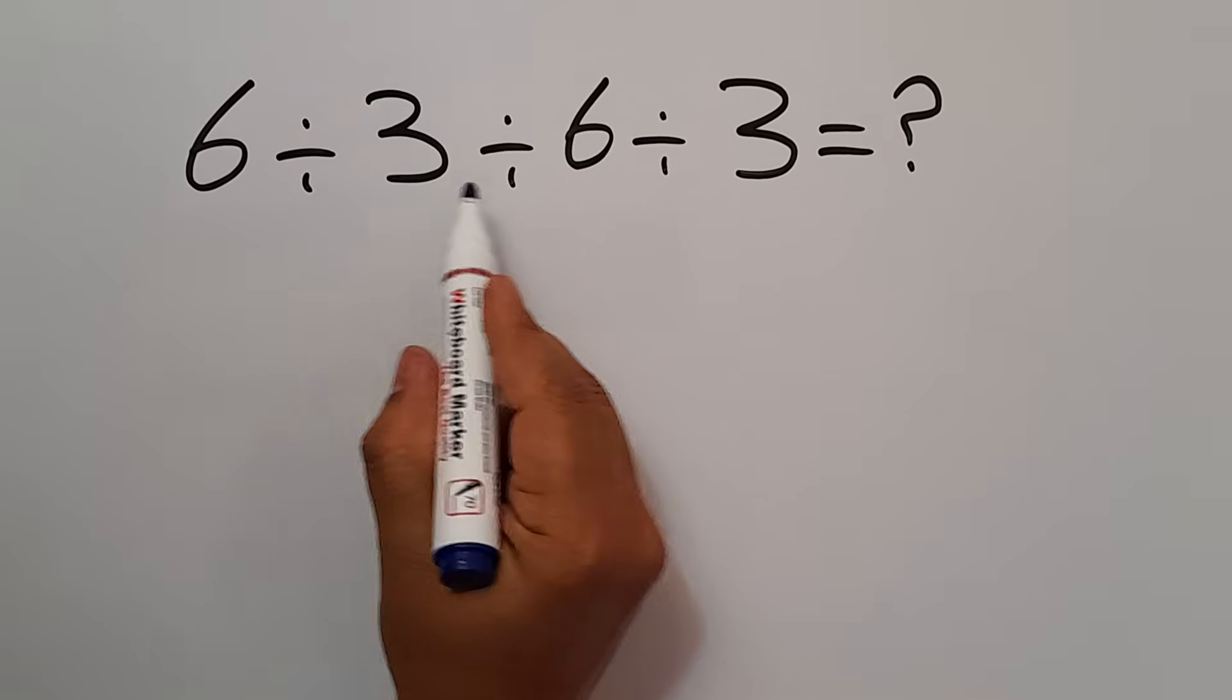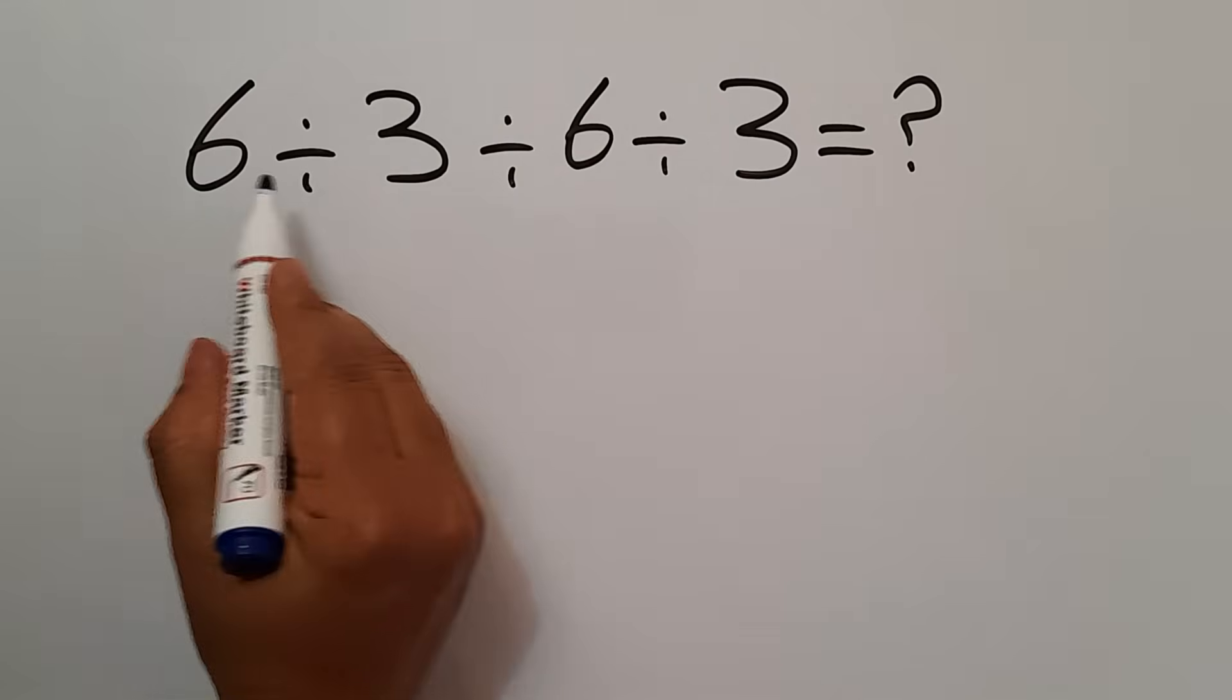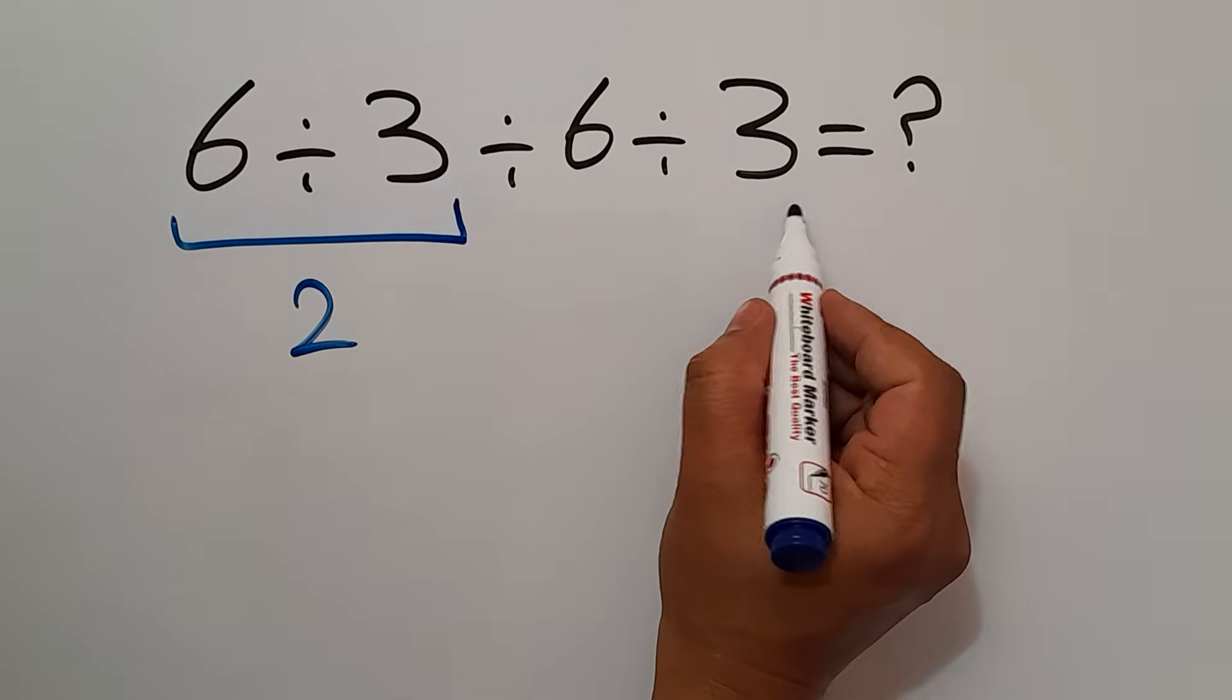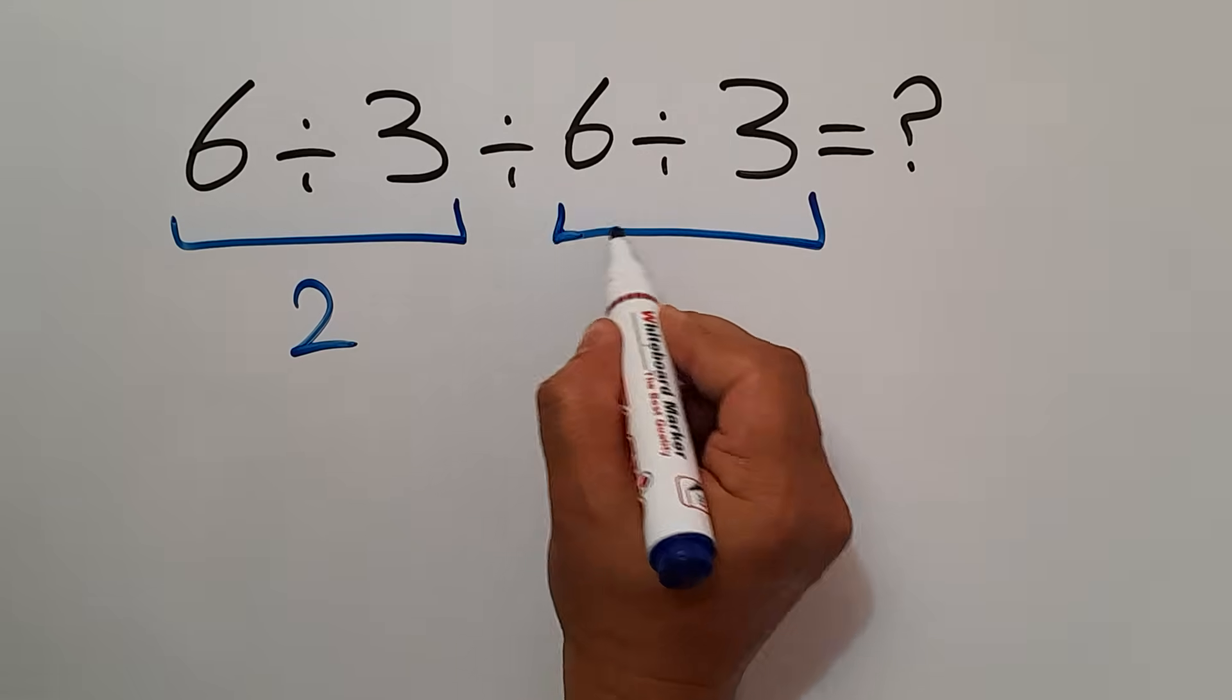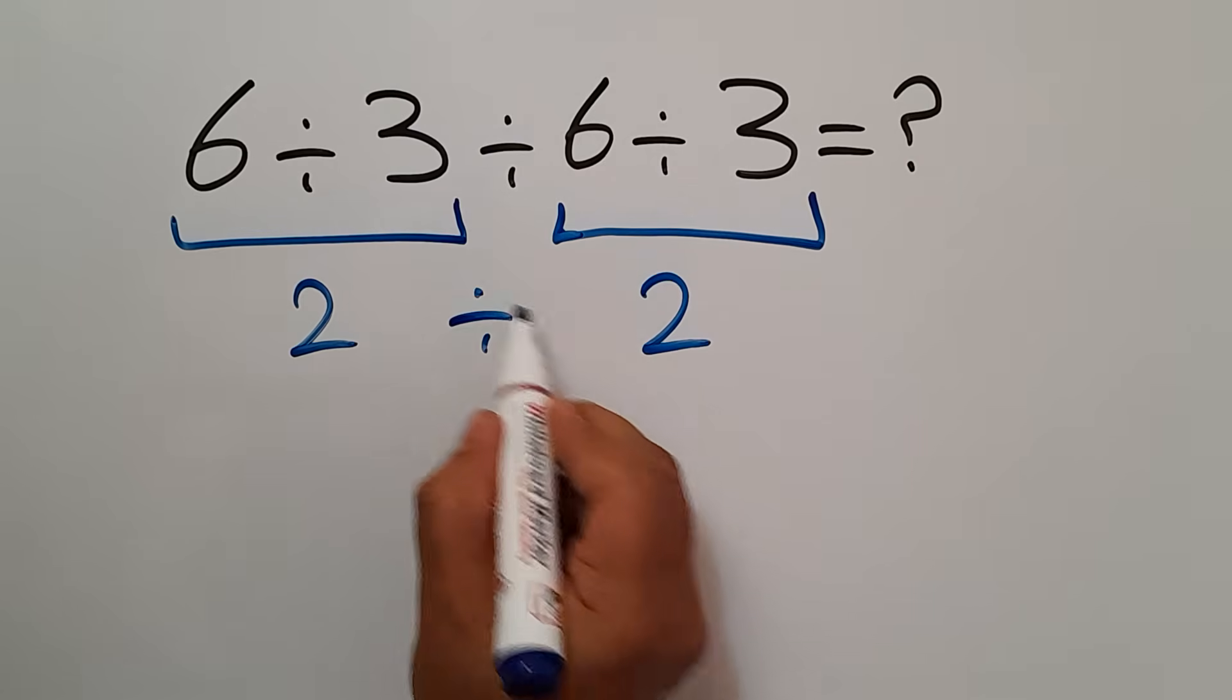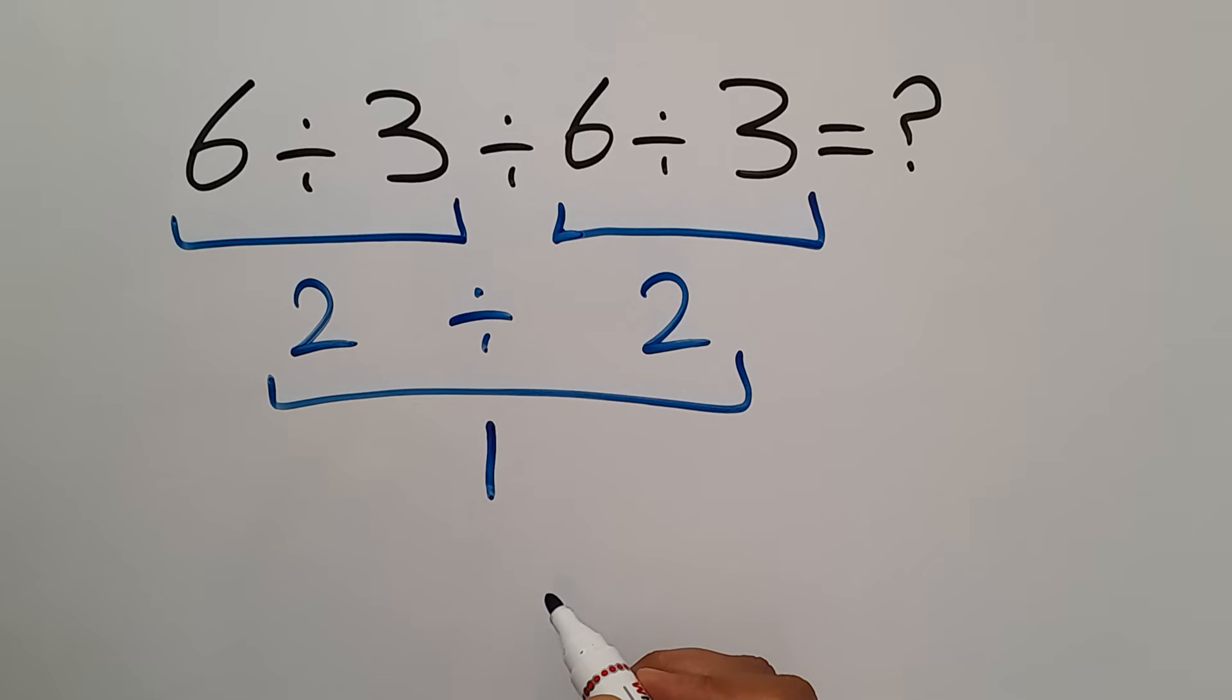6 divided by 3 divided by 6 divided by 3. 6 divided by 3 gives us 2. And again, we have here 6 divided by 3, which is 2. So 2 divided by 2 gives us just 1. But this answer is not correct.